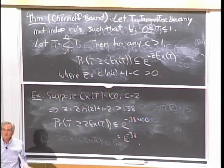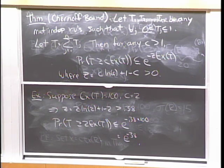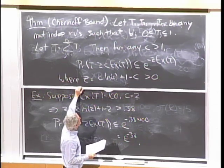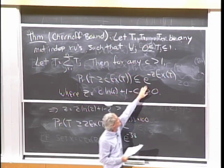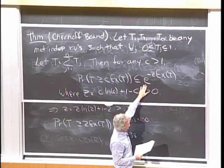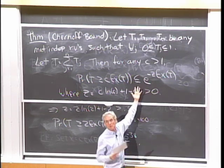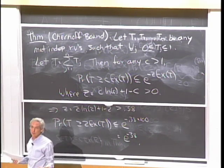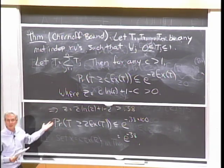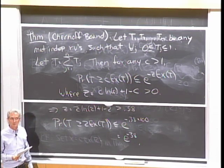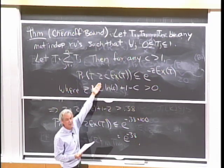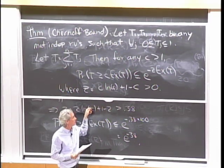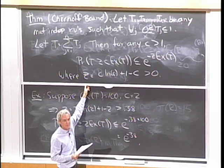The number of random variables n doesn't even appear in the bound — only E[T] and c matter. When c=1, z=0 and the bound gives probability ≤ 1, which is trivially true and not informative. As soon as c>1, the bound becomes powerful.